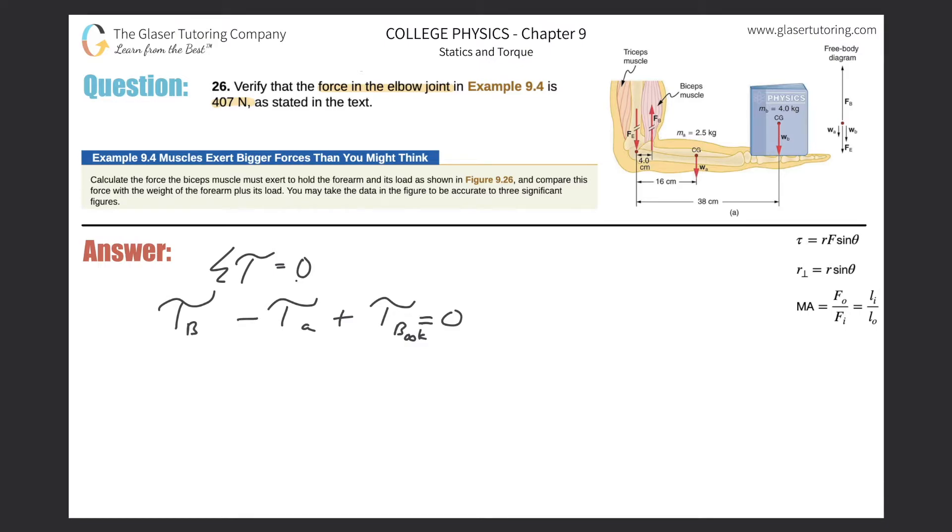And then the torque that's being produced by the book, the weight of the book is pointing down and therefore that force would rotate around the axis of rotation clockwise. And therefore, this should also be negative. Now remember, we're trying to find the force of the bicep and the force of the bicep is tied up in this torque for the bicep. So let's solve this for the torque of the bicep. So the torque that's being produced by the bicep should equal the torque of the arm plus the torque of the book.